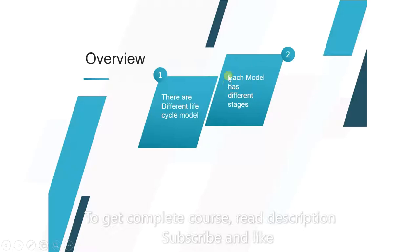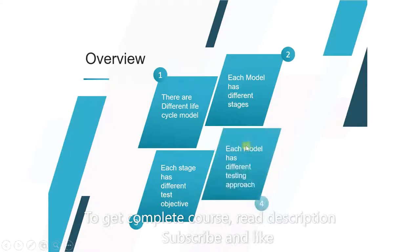This is why we have different models - each of them has stages that are unique to them. But why do we have these different stages? Because each stage has different test objectives. Also, each model has different testing approach.